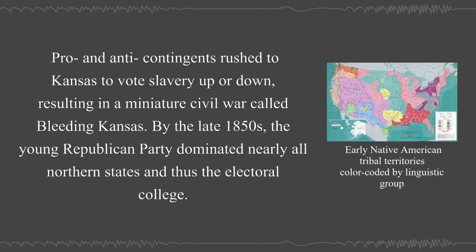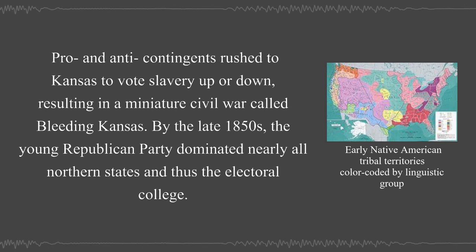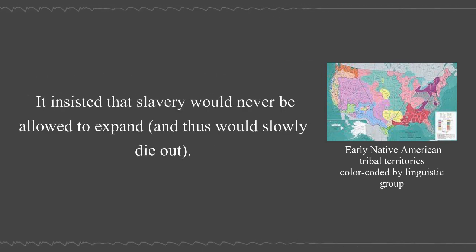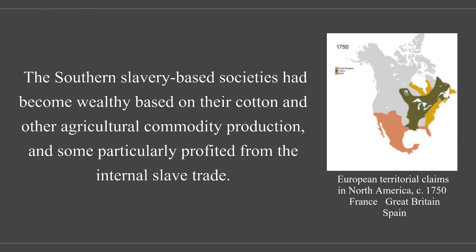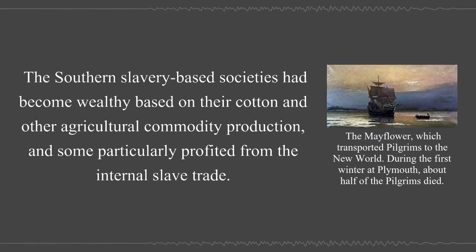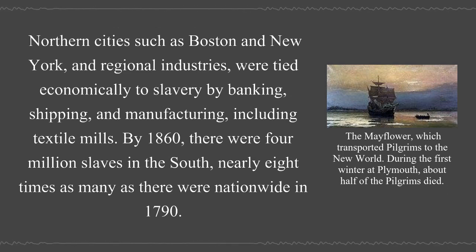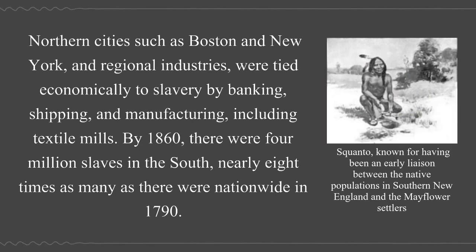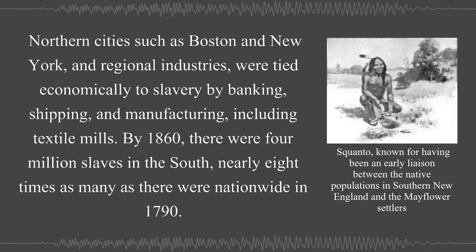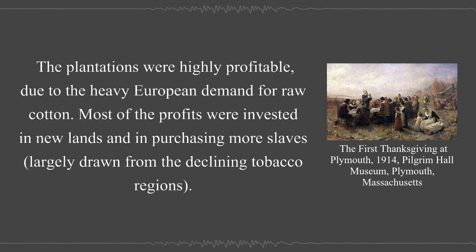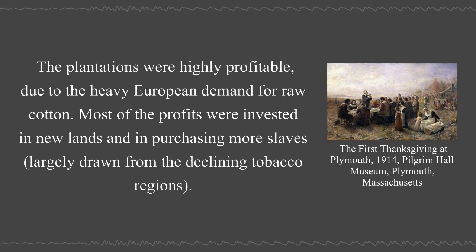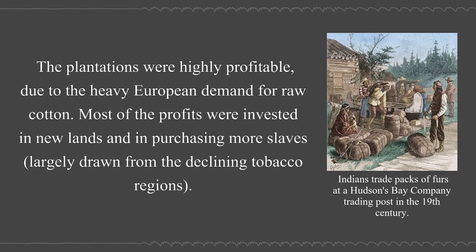By the late 1850s, the young Republican Party dominated nearly all Northern states and thus the Electoral College, insisting that slavery would never be allowed to expand and thus would slowly die out. The Southern slavery-based societies had become wealthy based on their cotton and other agricultural commodity production, and some particularly profited from the internal slave trade. Northern cities such as Boston and New York and regional industries were tied economically to slavery by banking, shipping, and manufacturing, including textile mills. By 1860, there were four million slaves in the South, nearly eight times as many as there were nationwide in 1790. The plantations were highly profitable due to the heavy European demand for raw cotton, and most of the profits were invested in new lands and in purchasing more slaves.